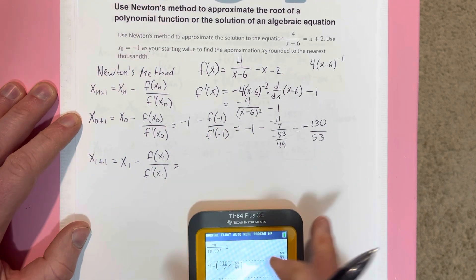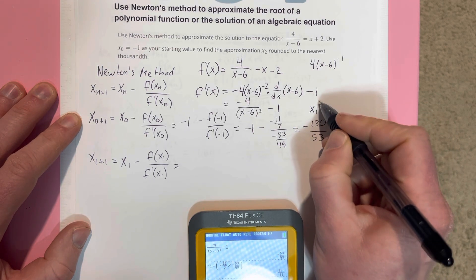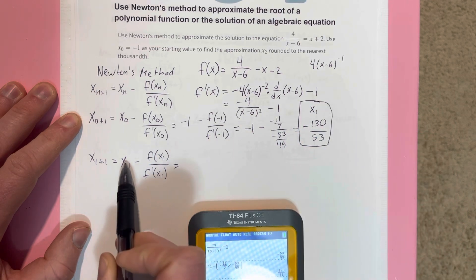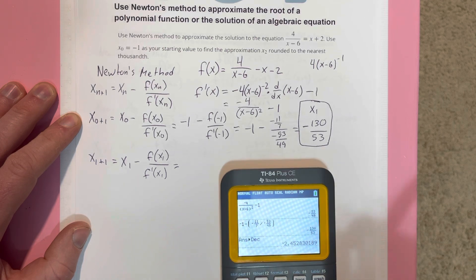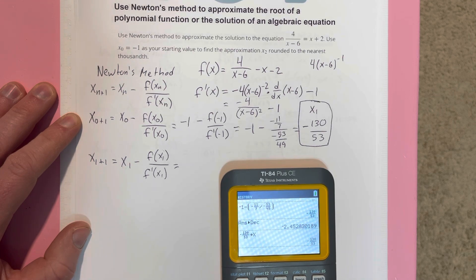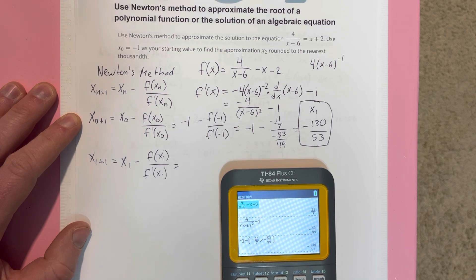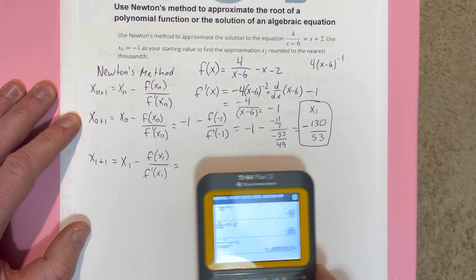We know we just found this is x₁. So we're going to put x₁ right here, and that's the input for f and for f'. So I'm going to go ahead and do that. Let's store this as x, grab the original function, then grab the derivative. All right, we got two numbers there.